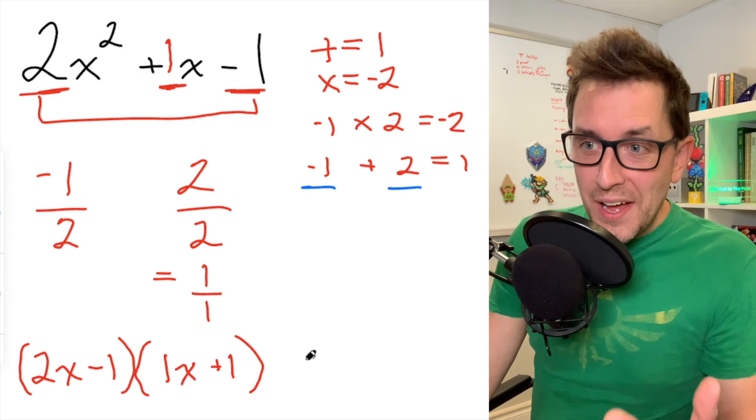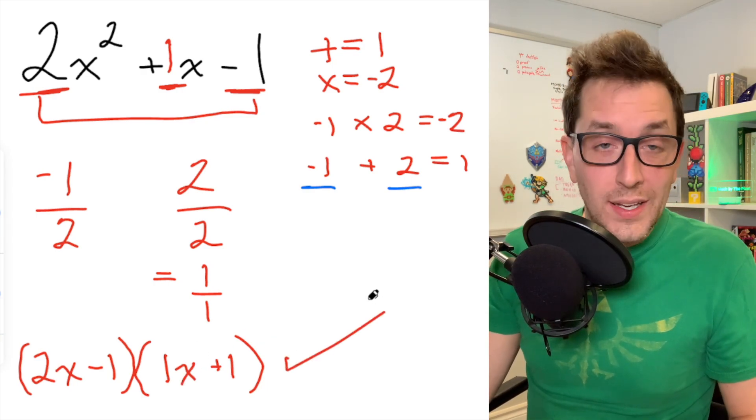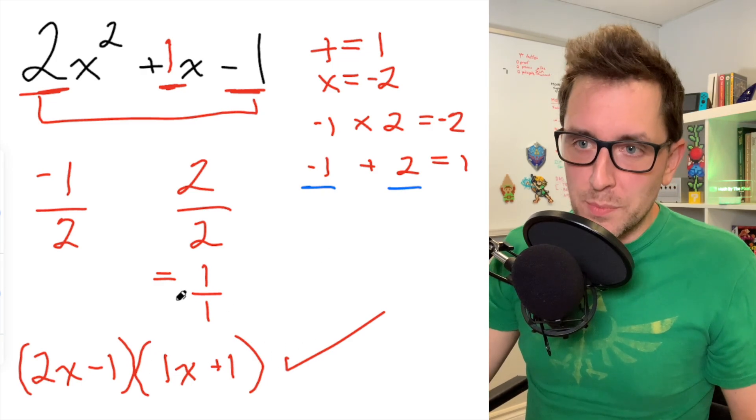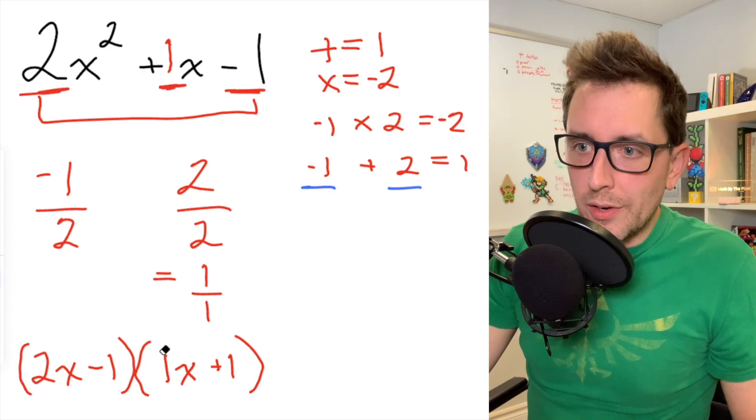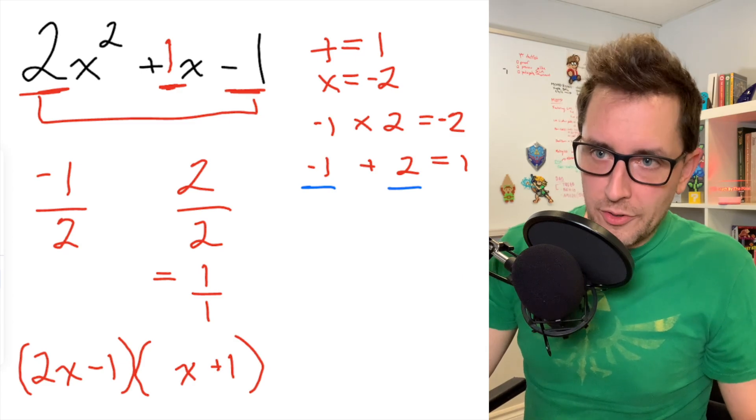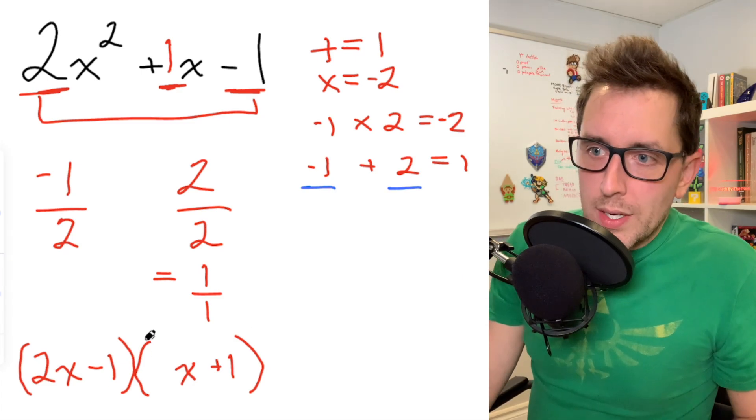And you're going to see that we have a factored form expression right here. We have 2x - 1 times 1x + 1. Now, we don't need that 1 in front of the x. I can get rid of that just to have x + 1. 2x - 1 times x + 1. This is our factored form expression.